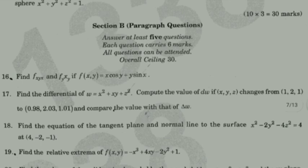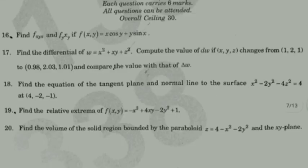Find the equation of the tangent plane and the normal line to the surface x² + x² - 2y² - 4z² = 4 at the point (4, -2, 1).